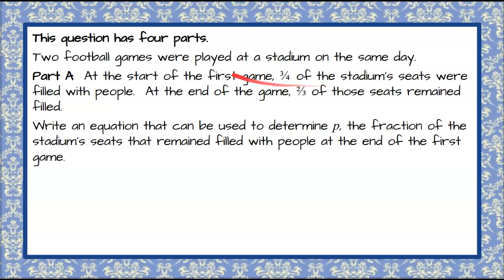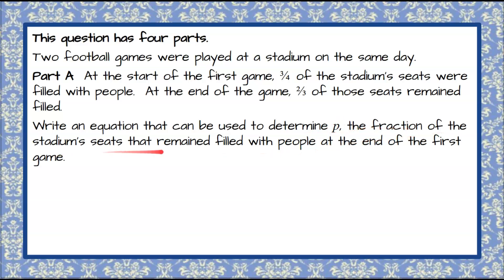Here's our question today. This question has four parts. Two football games were played at a stadium on the same day. Part A: At the start of the first game, three-fourths of the stadium seats were filled with people. At the end of the game, two-thirds of those seats remained filled. We're going to write an equation that can be used to determine P, the fraction of the stadium seats that remained filled with people at the end of the first game. I'd like you to pause the video here, attempt Part A, and then come back to see my work.